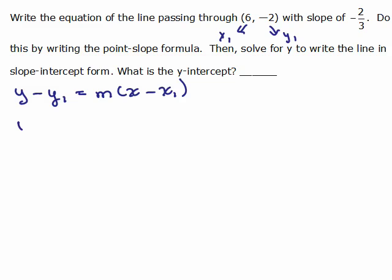Alright, so we have Y minus Y₁ is your negative 2. Don't put 2, put negative 2. That's your slope. Okay, so your slope is negative 2/3 and then you must put this in parentheses X minus your X₁ was 6.